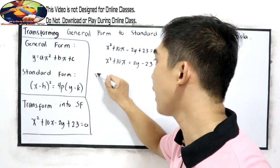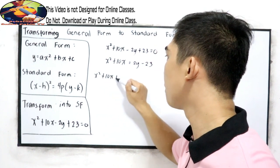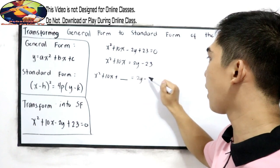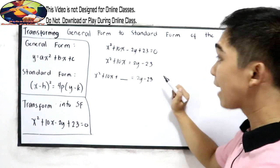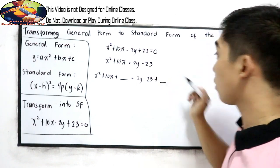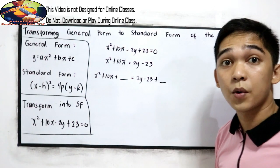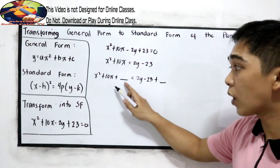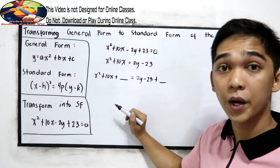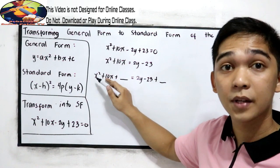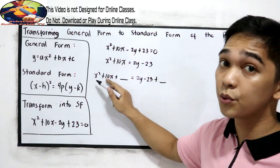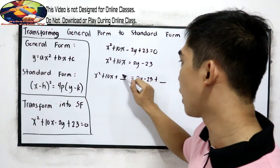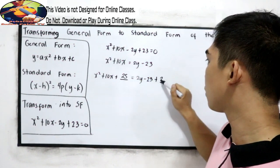So x squared plus 10x plus blank equals 2y minus 23. We added blank on the left side. We need to add blank on the right side to make our equation balance. Now, what will be the value of the blank? I'm completing the square. In the middle term, 10 divided by 2, that is 5. 5 squared, 25. So we need to add 25 and 25.